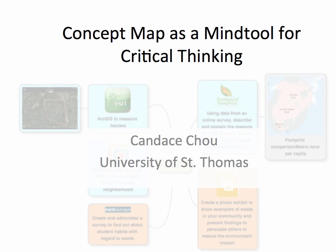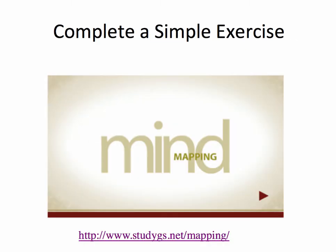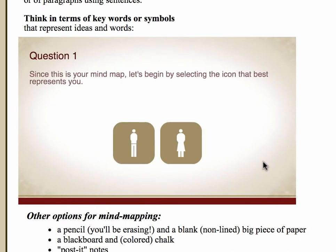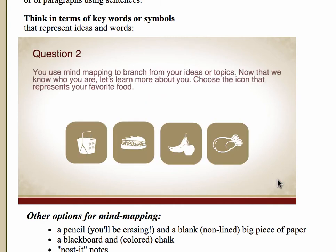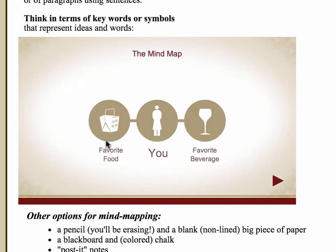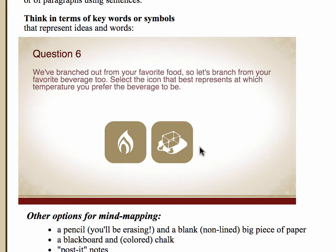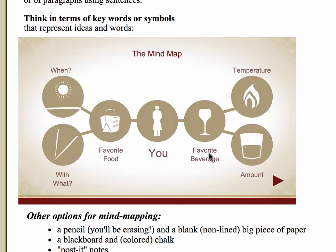This video provides a quick overview of concept maps as a mind tool for critical thinking. First, let's go to a website to complete a simple exercise. You will learn the basic concept of mind mapping: choose your own representation, then do a simple exercise on what you prefer to eat and drink. This helps learners map out ideas about themselves, their preferences, and the temperature and amount of drink.